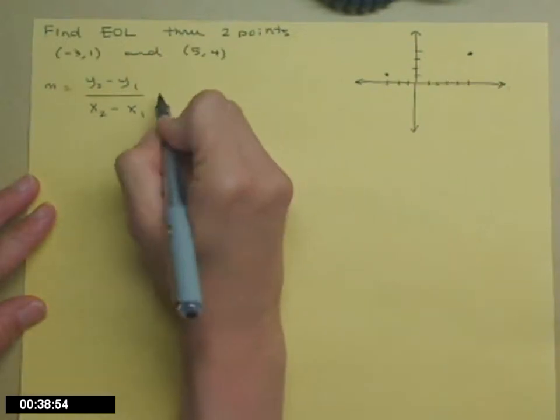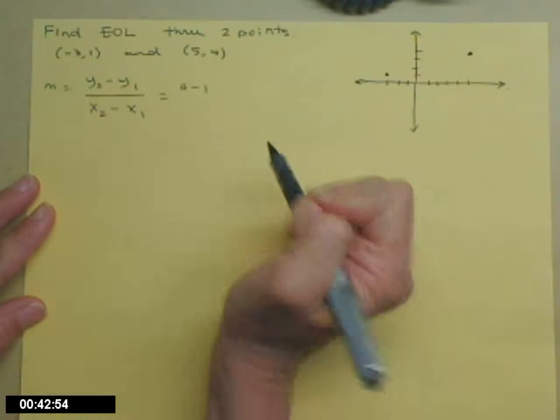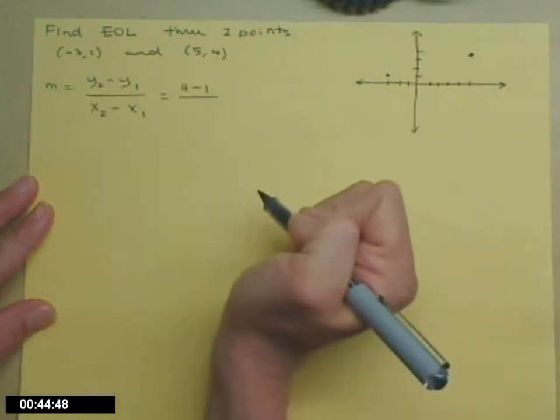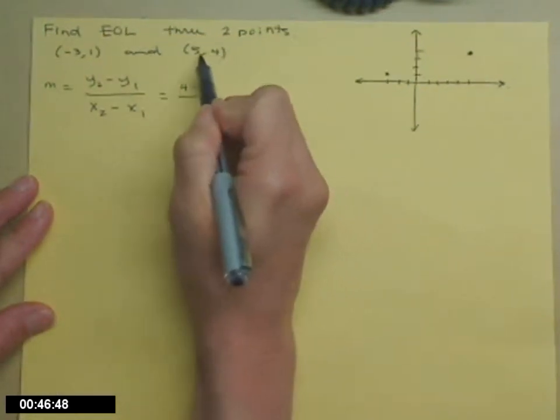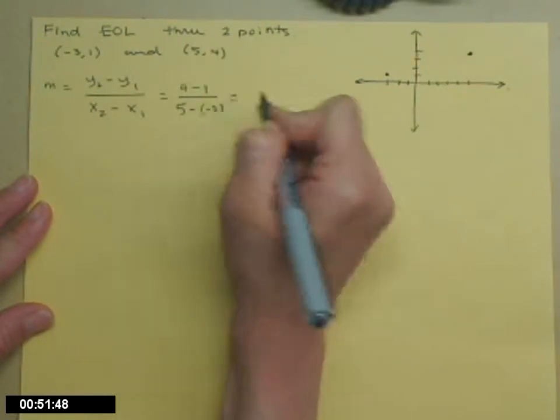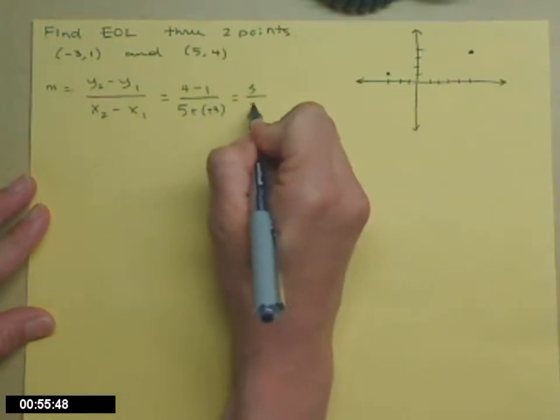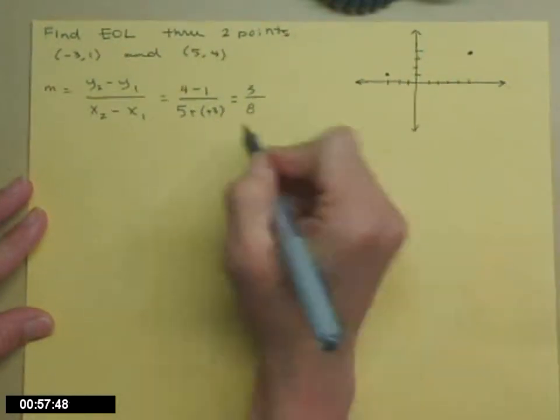Here we go, change in y: 4 - 1 divided by change in x. Since I started with the 4, I have to start with the 5 on the bottom: 5 - (-3). 4 - 1 is 3, minus a negative is plus a positive, so 3/8. My slope is 3/8, it's positive.